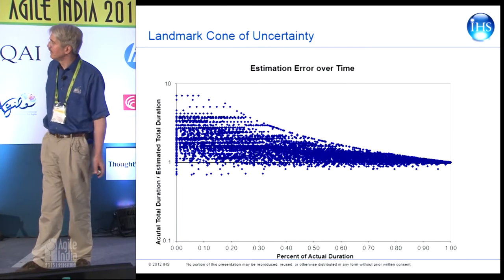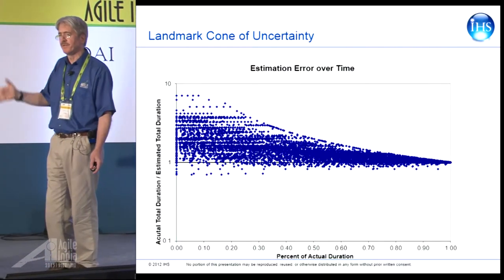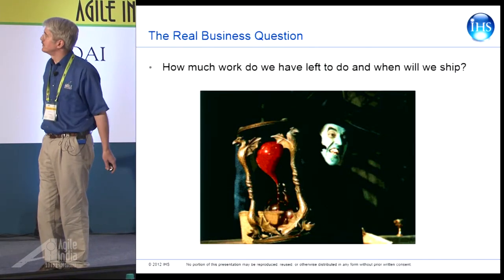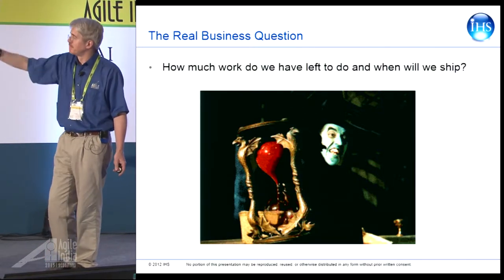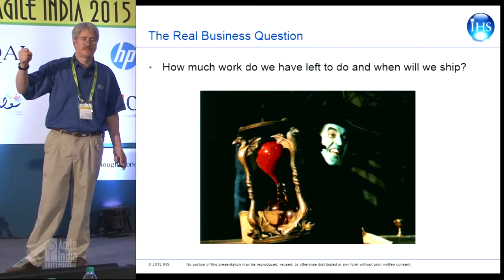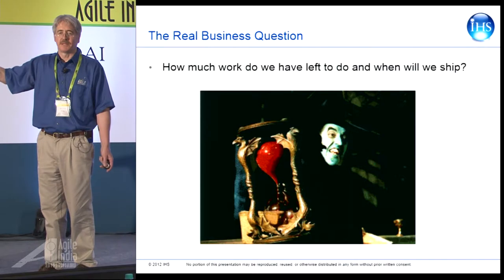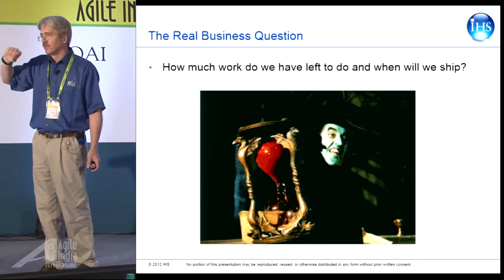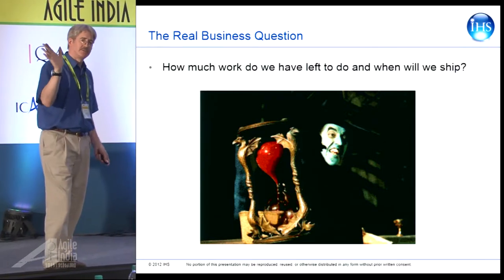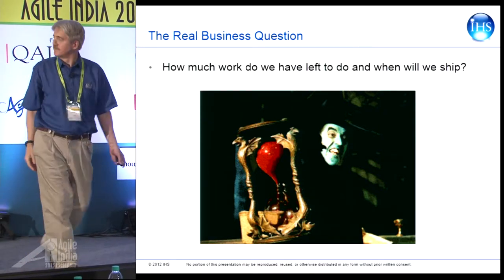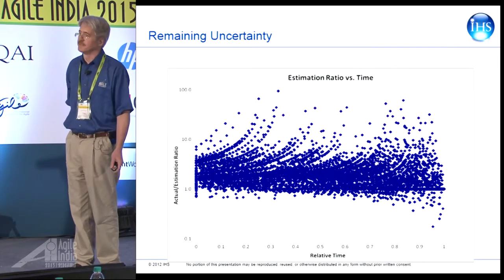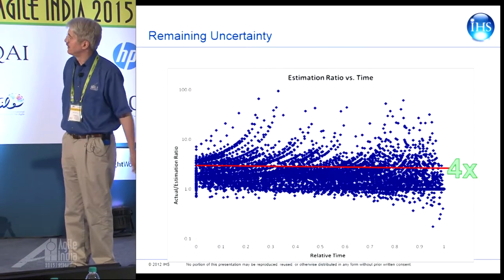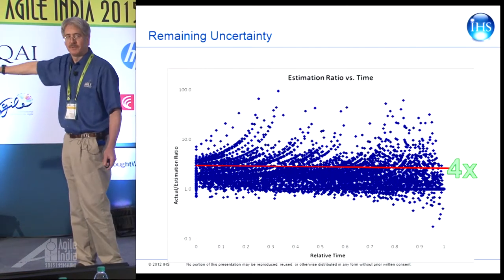But does that tell me anything really useful? The real business question is: how much work do we have left when we ship? Like the hourglass in Wizard of Oz — I don't care how much sand has already passed; I care about how much time is left. So I want to look at my uncertainty of what I have left, not what I've already done. I plotted this differently and asked, what's the remaining uncertainty? And I no longer have a cone — I have a pipe. It stays pretty much the same all the way through.